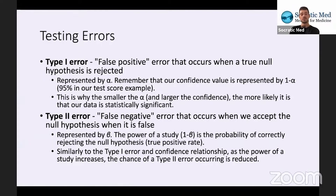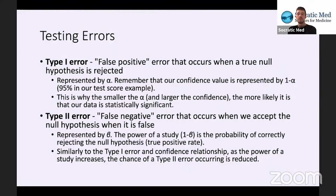When we reject the null hypothesis, we're proving statistical significance. If a type one error is committed — a false positive — we should have accepted the null hypothesis but rejected it instead. It's represented by alpha. Our confidence value is represented by one minus alpha. This is why the smaller the alpha, the larger the confidence, and the more likely it is that our data is statistically significant.